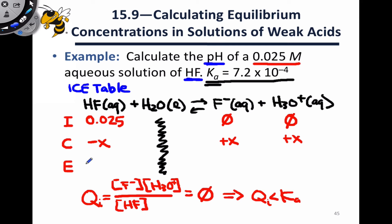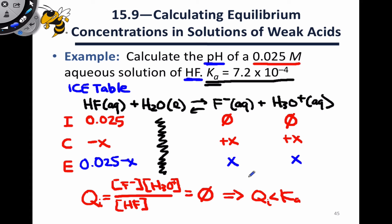On the equilibrium line, adding the initial and change lines gives us 0.025 minus X for HF, and X for both fluoride and hydronium. Applying these equilibrium concentrations to the equilibrium expression, Ka equals X times X — X squared — divided by 0.025 minus X.